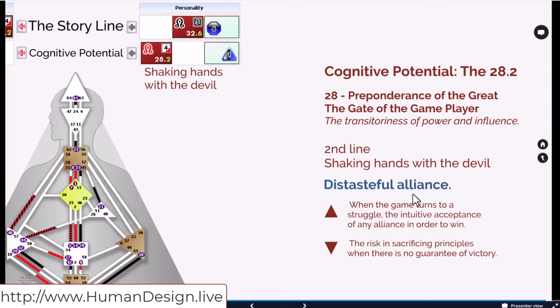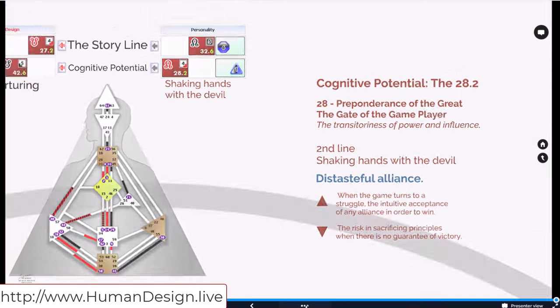Distasteful alliance. Another way of saying this is when the game turns to a struggle, the intuitive acceptance of any alliance in order to win and the risk of sacrificing principles when there is no guarantee of victory. But it is this very way that I have a cognitive potential or a linkage that my mind can identify with. I really could see this personally in myself and played out in my life.